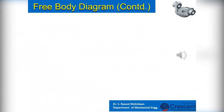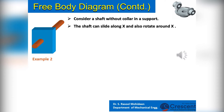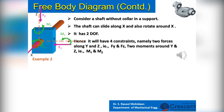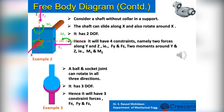We will see a few more examples of constraint forces. Consider a shaft without a collar in its support. The shaft can slide along X and also rotate around X, so it has two degrees of freedom. Hence it will have four constraints — namely two forces along Y and Z (FY and FZ) and two moments around Y and Z. Similarly, for a ball and socket joint, it can rotate in all three directions, so it has three degrees of freedom. Hence it will have three constraint forces: FX, FY, and FZ.